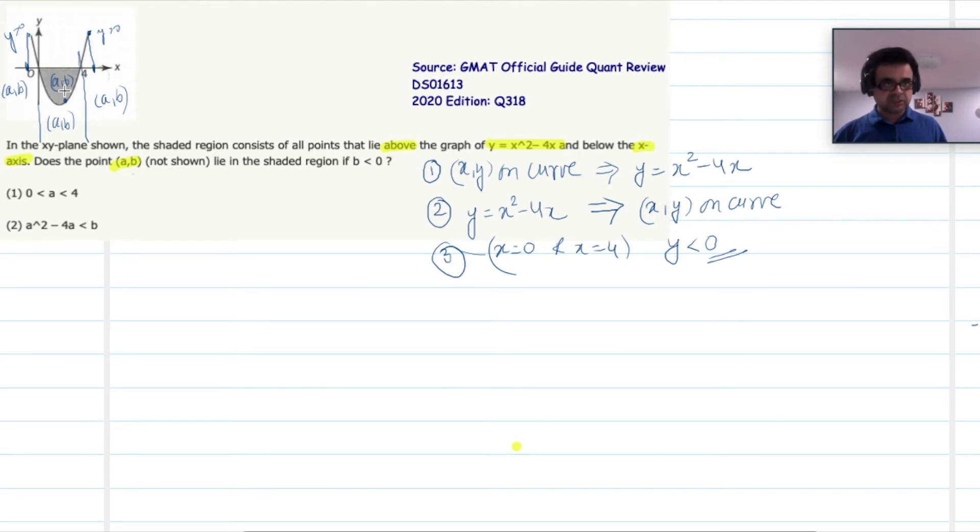However, there are still three possibilities between 0 and 4 for (a,b). It could be inside the shaded area. It could be right on the curve. Nothing is given about b.